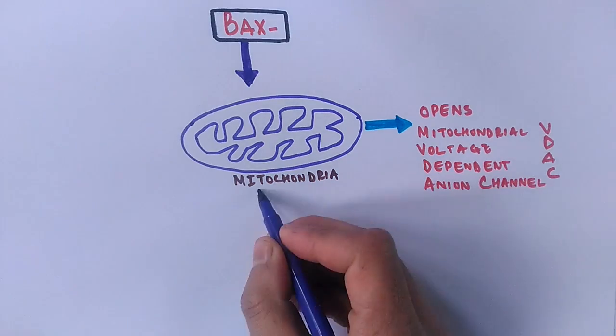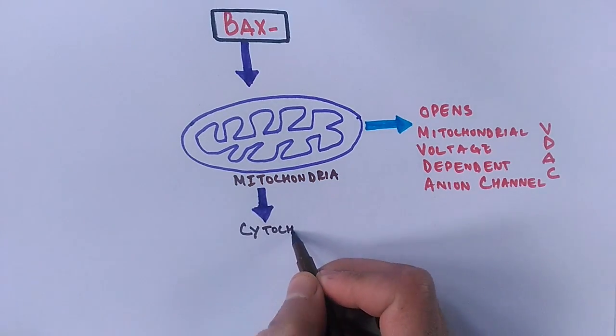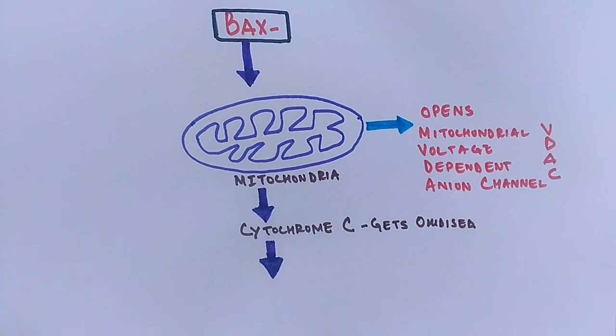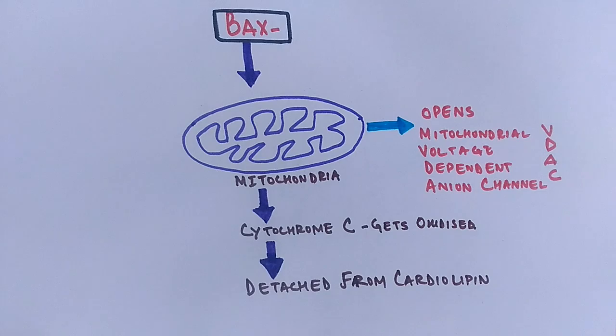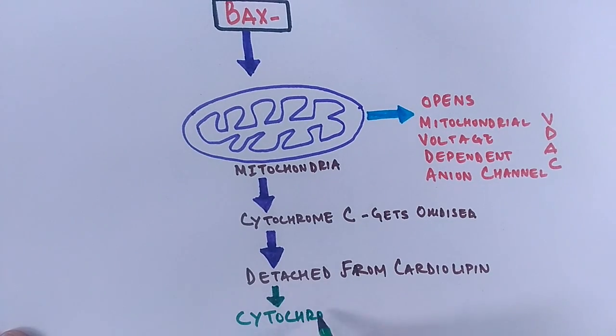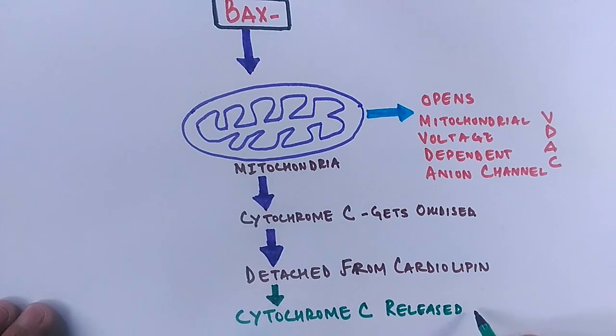On the other hand, we have this cytochrome c, it gets oxidized by peroxidase. We have different mechanisms for how this cytochrome c gets oxidized. After oxidation, there's a detachment of cardiolipin, that's the attached protein to the cytochrome c, and by this the cytochrome c gets released into the cytosol.